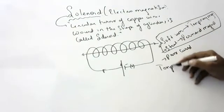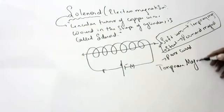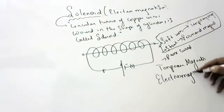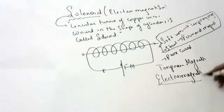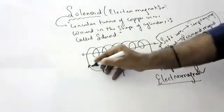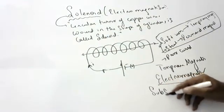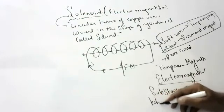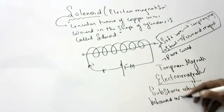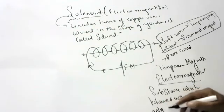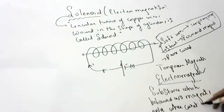Temporary magnets are called electromagnets. What is an electromagnet? A substance which behaves as a magnet only when current is passed is called an electromagnet. Only when you pass current does it behave as a magnet.